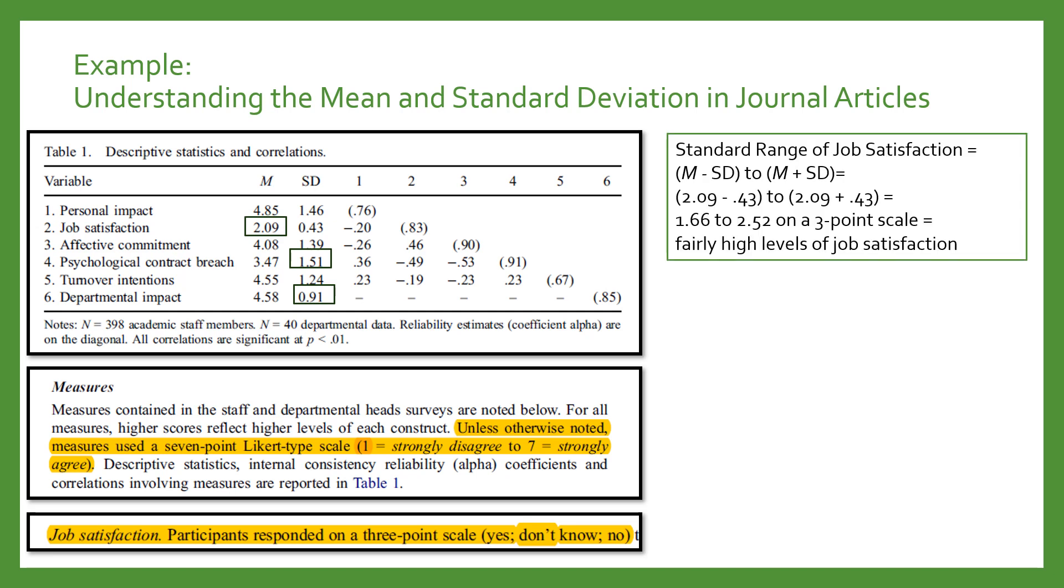Now let's think about the standard range here. For job satisfaction, the mean is 2.09, the standard deviation is 0.43. So you take 2.09 minus that standard deviation of 0.43 to get the low end of 1.66, and then take that mean of 2.09 plus the standard deviation of 0.43 to get the high end of your standard range of 2.52. So on a three-point scale, we have fairly high levels of job satisfaction, where most people were between 1.66 and 2.52 on a three-point scale.